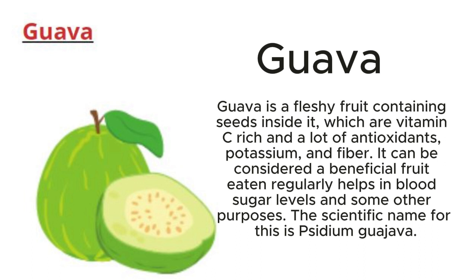Guava: Guava is a fleshy fruit containing seeds inside it, which is vitamin C rich with a lot of antioxidants, potassium, and fiber. It can be considered a beneficial fruit — eaten regularly, it helps in blood sugar levels and some other purposes. The scientific name for this is Psidium guajava.